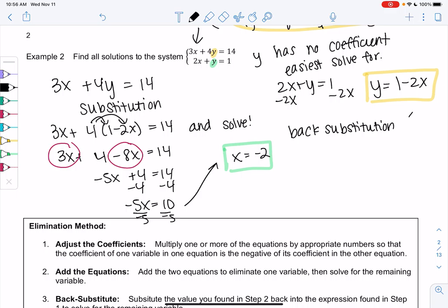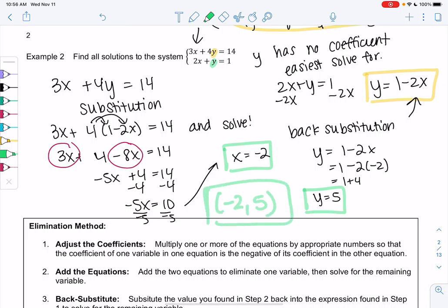And then that final step, step 3, was called a back substitution. What we'll do is we plug x back into the equation for y. So we know y is 1 minus 2x. And now that we know x is negative 2, we can say y is 1 minus 2 times negative 2. Or y is 1 plus 4. Or y equals 5. And we found our solution. The solution is negative 2 and 5.